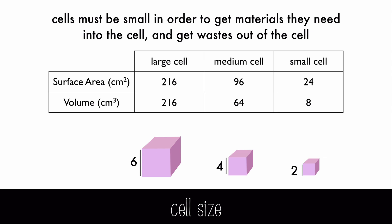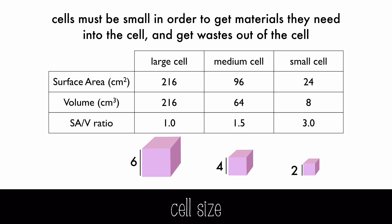When you look at the surface area to volume ratio, you can see that the small cube actually has three times more surface area compared to its volume when compared to the large cell. This means that there's more surface area for the cell to transport the things it needs in order to survive.